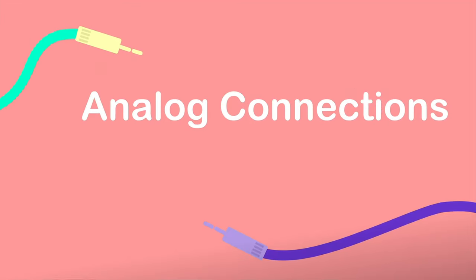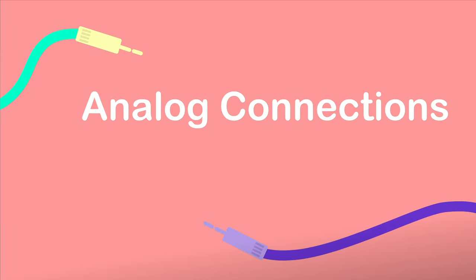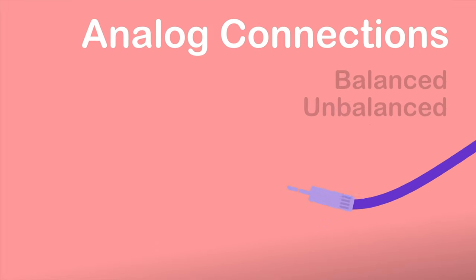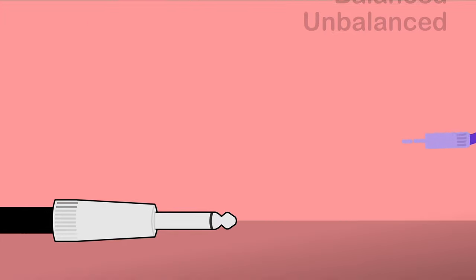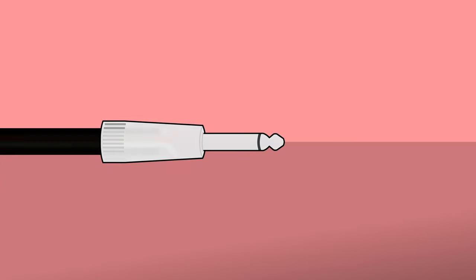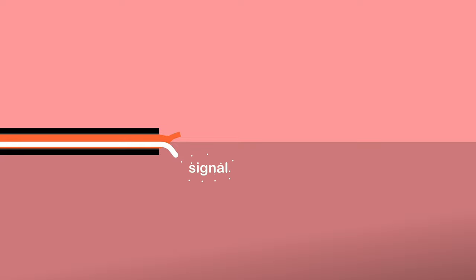Before we talk about the analog connections found on audio interfaces, we need to explain the concept of balanced and unbalanced connections. A standard audio cable consists of two wires or conductors: the signal wire that carries a signal, and the ground wire or shield that protects the signal from outside interference.